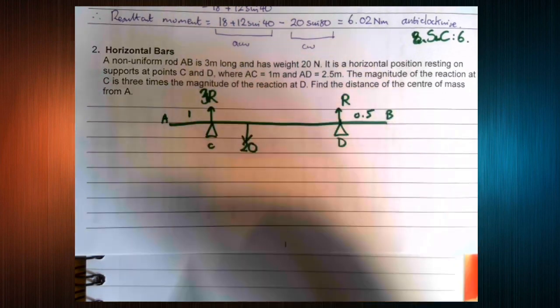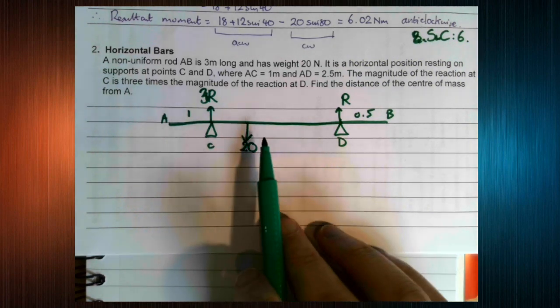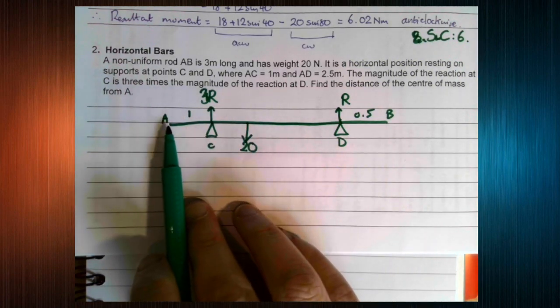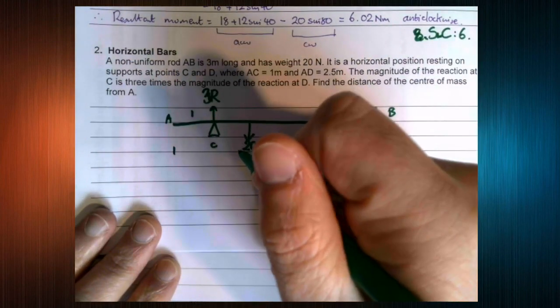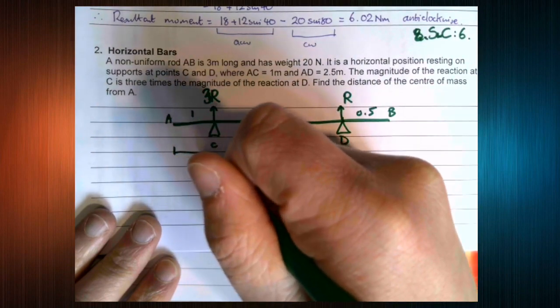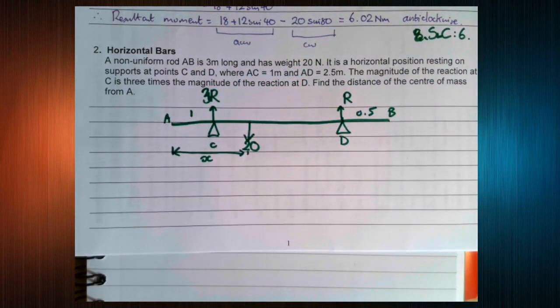That's 20 newtons down. Remember, it's not 20g, it is 20. Now we're trying to find the distance of this from A.